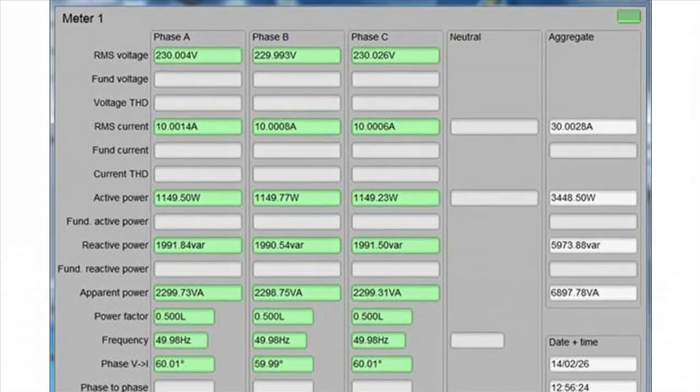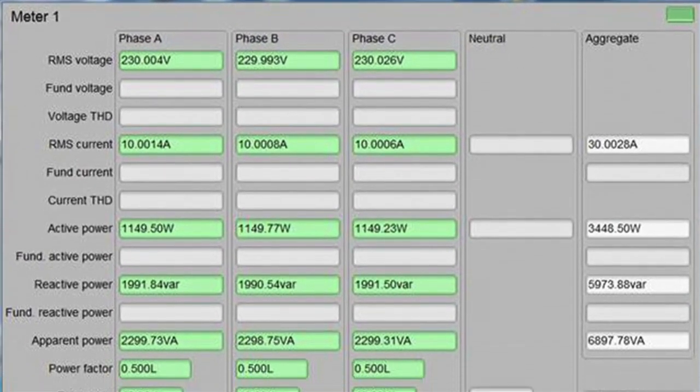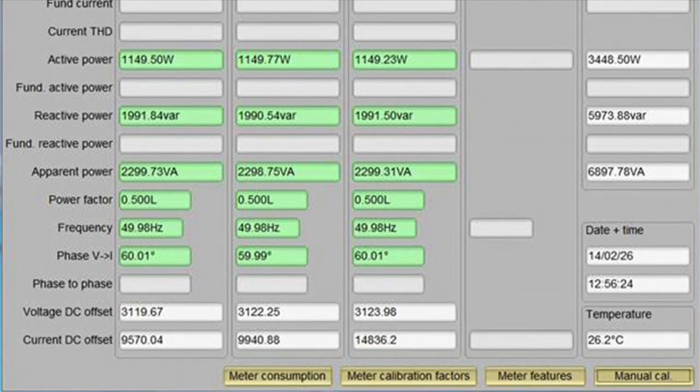This GUI may also be used to display each phase's voltage, current, active, reactive, and apparent power, power factor, phase shift, frequency, and other parameters.